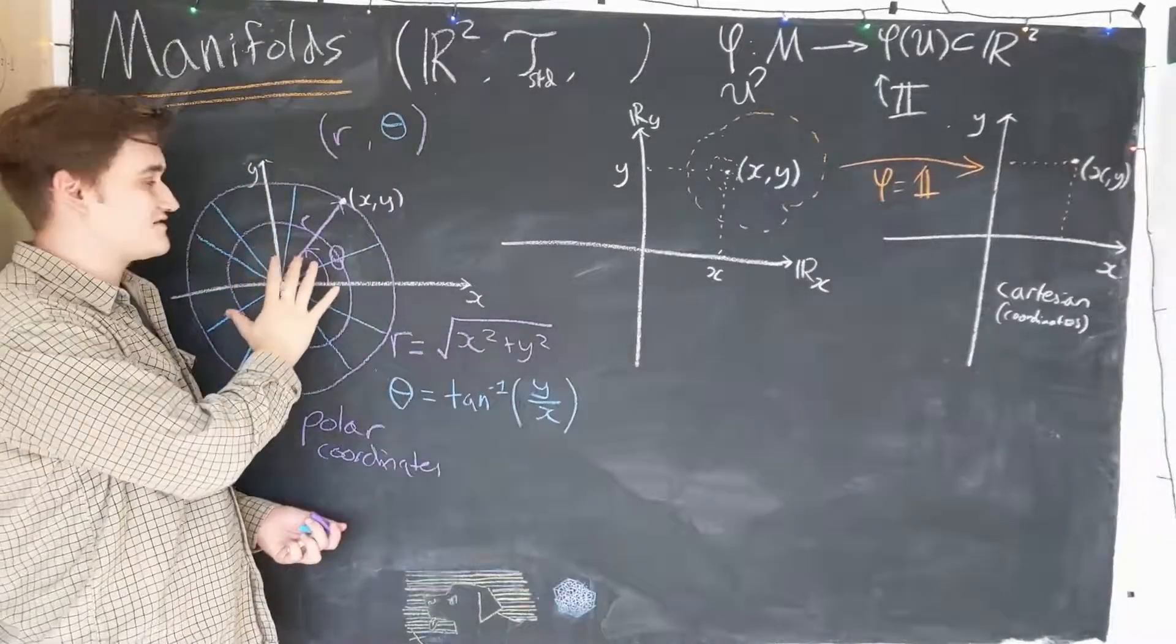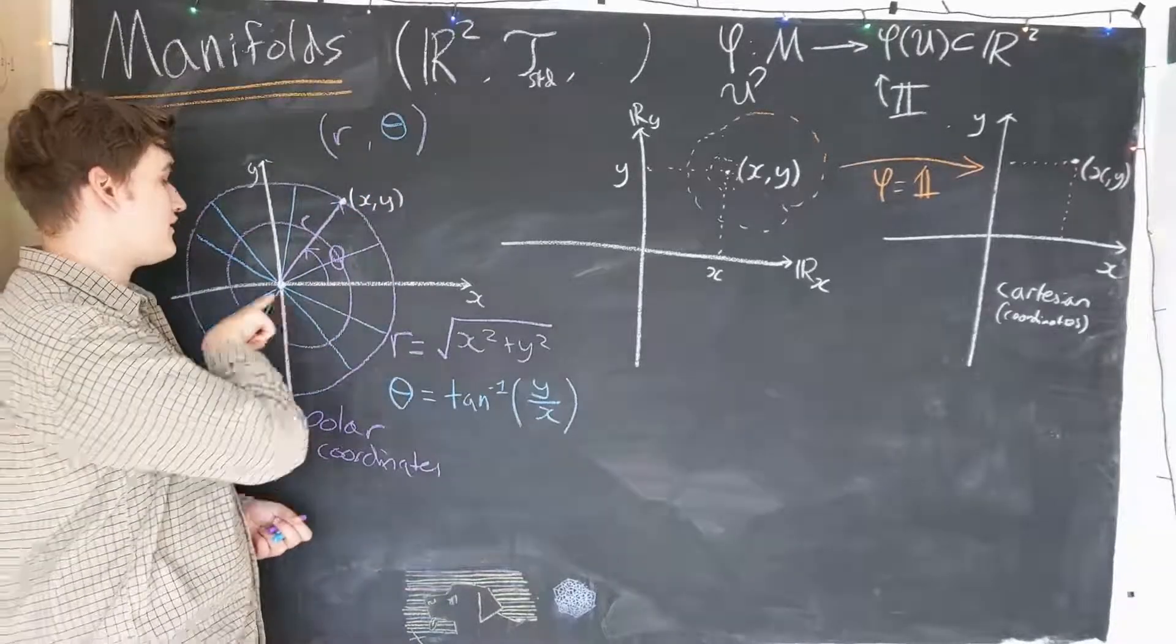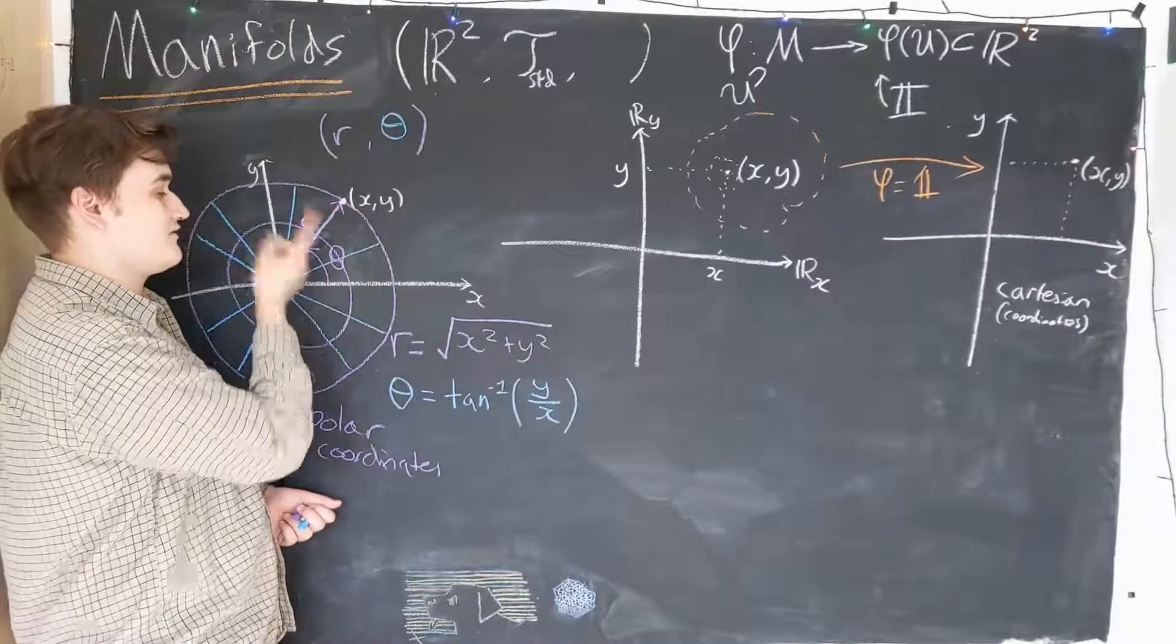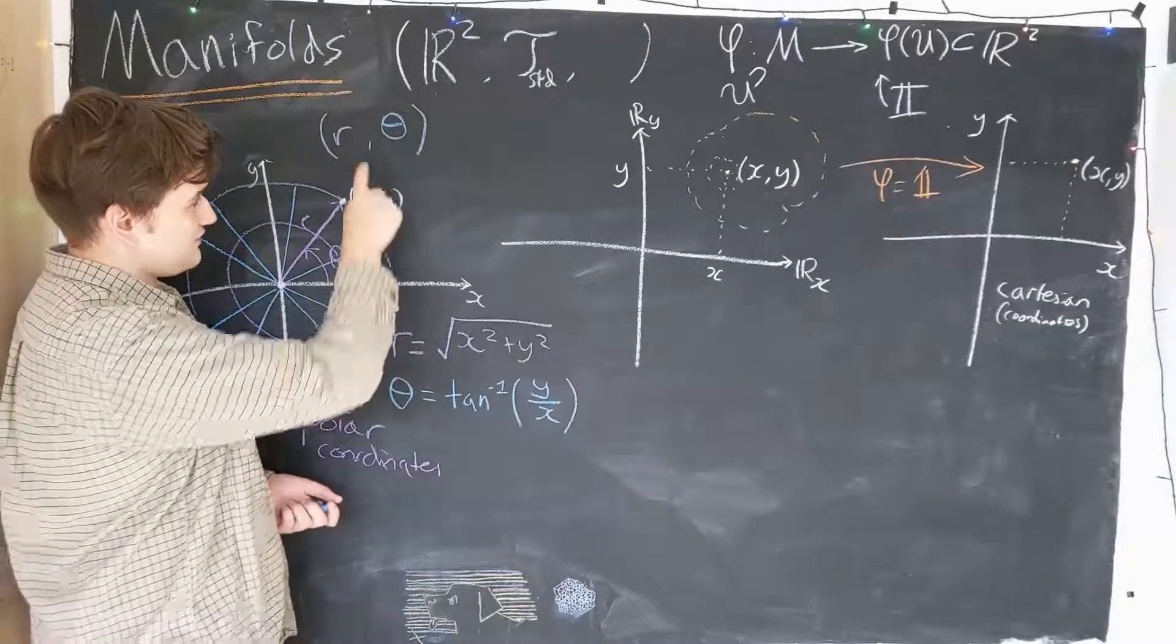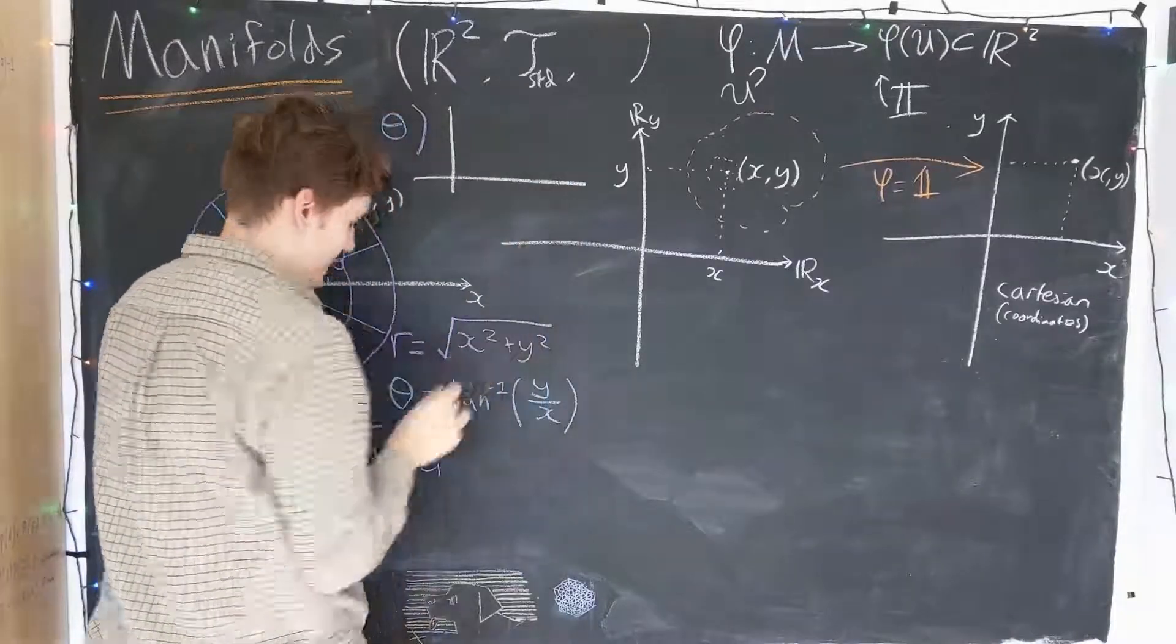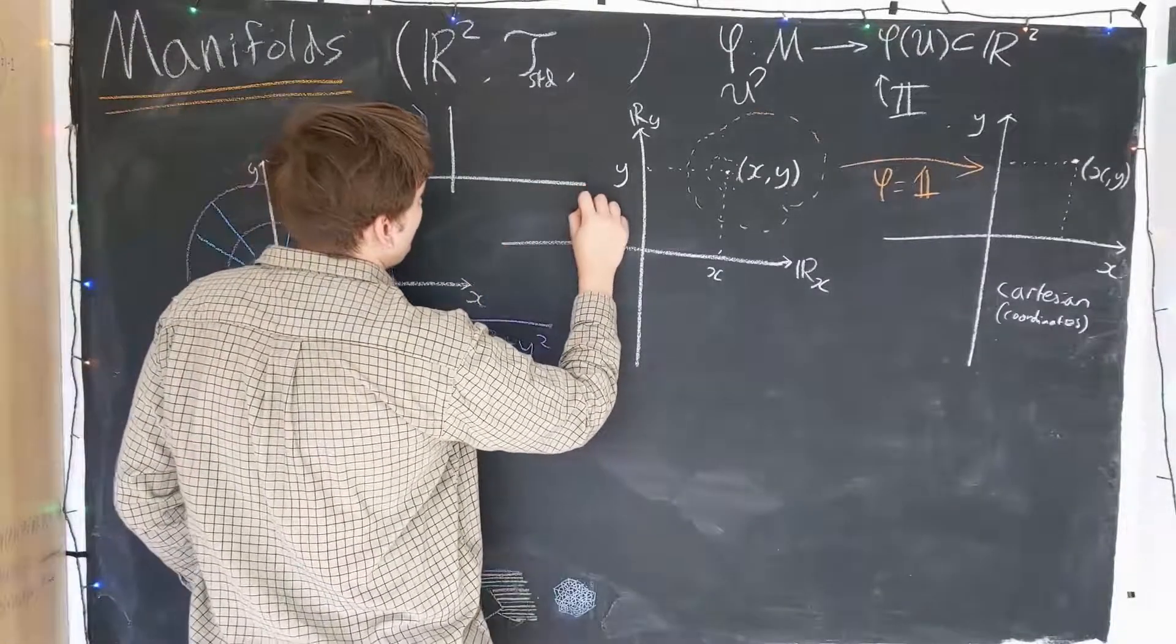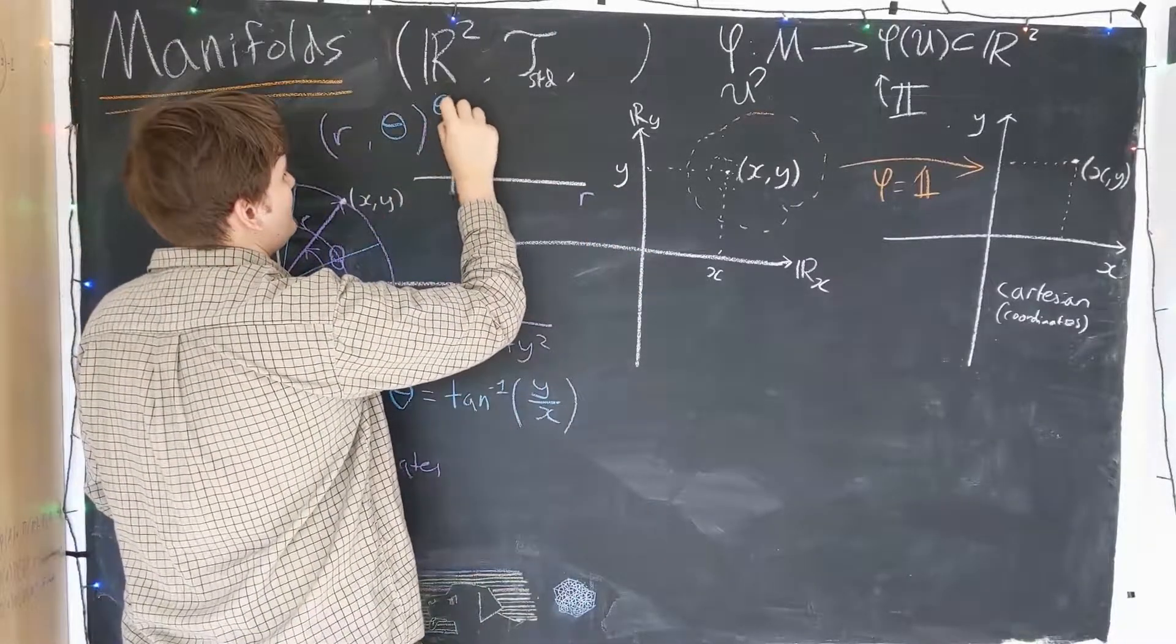So now we've covered this entire space using these R theta coordinates, if you like. You can reach any x, y by just specifying a radius and a theta. So if you like, we can re-draw this as a map into R² in the following way.